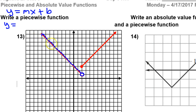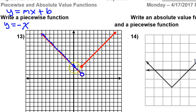Right away, I see the slope is going to be negative because from left to right it's going downhill, as opposed to the red one which is positive, going uphill. From point to point, it's going down one, right one — so that slope is negative one. I'll write negative x. The y-intercept is where the graph touches the y-axis, and that's here at three. So that's going to be negative x plus three.